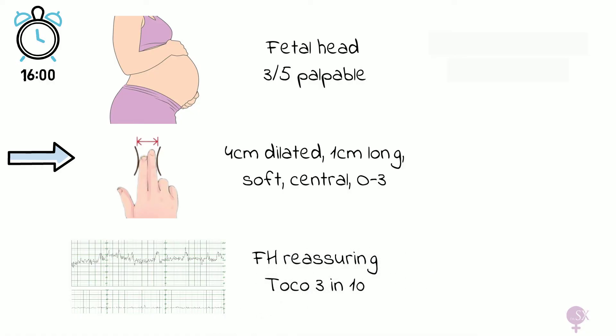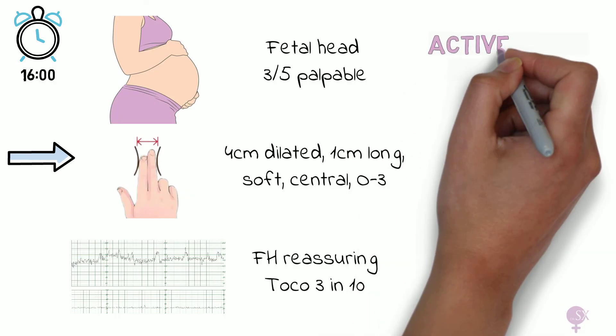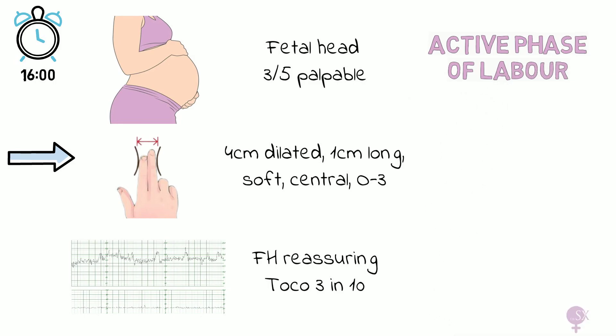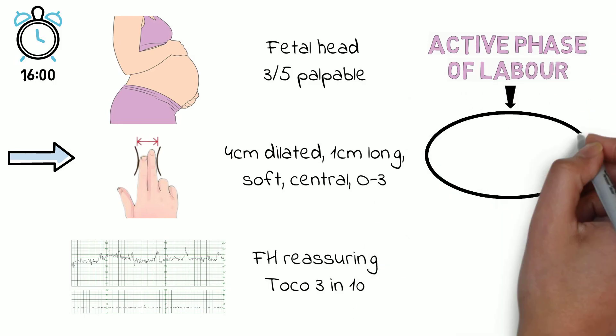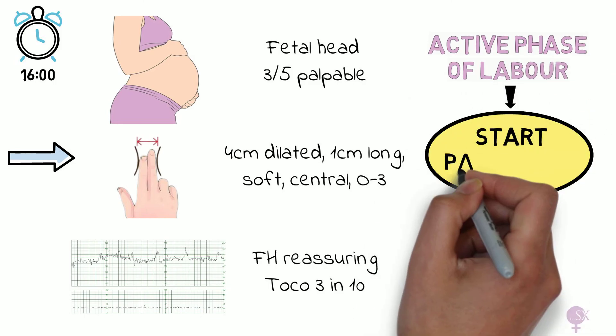Since she has regular contractions and is already 4 cm dilated, she has entered the active phase of the first stage of labor, and therefore we can start our Part-O-Gram.